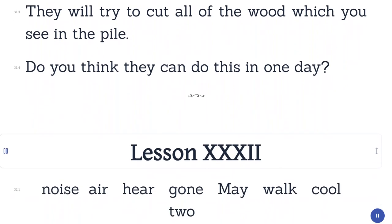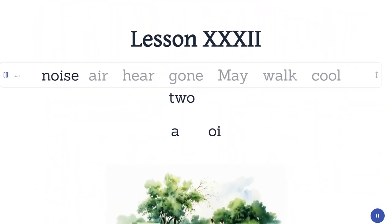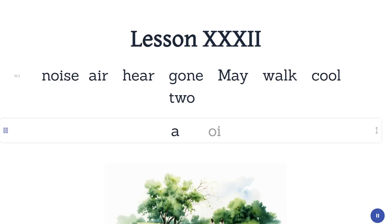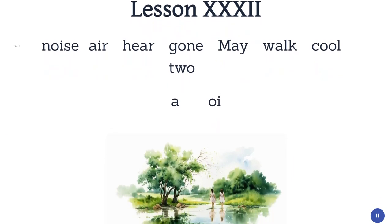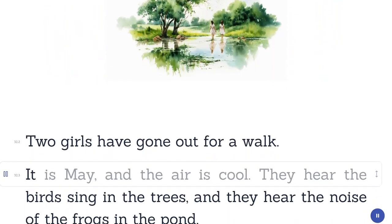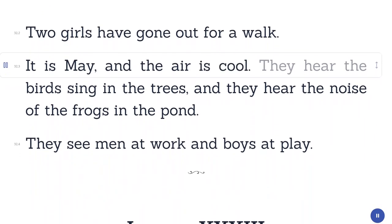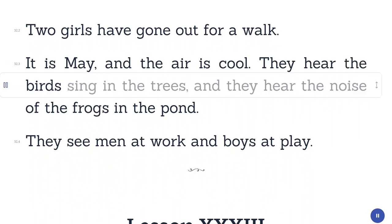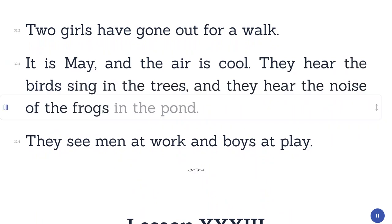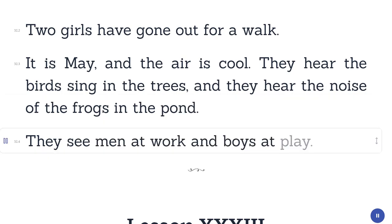Lesson 32. Noise. Air. Hear. Gone. May. Walk. Cool. Two girls have gone out for a walk. It is May, and the air is cool. They hear the birds sing in the trees, and they hear the noise of the frogs in the pond. They see men at work and boys at play.